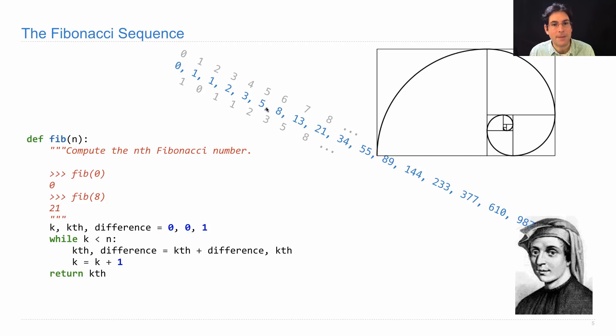Then we'll march up the sequence. While k is less than n, where n is the index of the number that I'm looking for, I'll rebind kth and difference to be the kth number that I had before plus the difference that gets me to the next Fibonacci number. And the difference is the kth Fibonacci number.